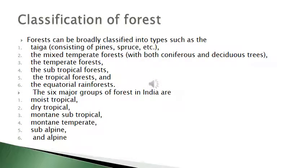Forests can be broadly classified into types such as the taiga, consisting of pines, spruces, etc.; the mixed temperate forest with both coniferous and deciduous trees; the temperate forest; the subtropical forest; the tropical forest; and the equatorial rain forest. The six major groups of forests in India are moist tropical, dry tropical, montane subtropical, montane temperate, subalpine, and alpine. These are subdivided into 16 major types of forest.